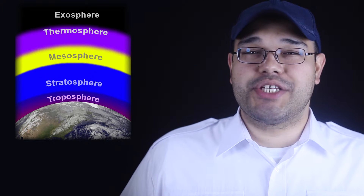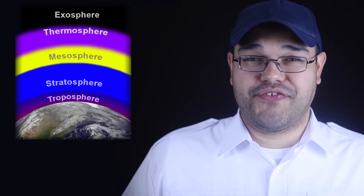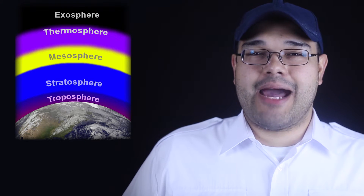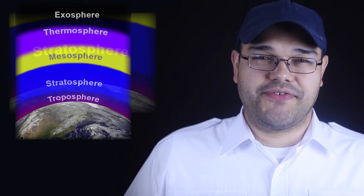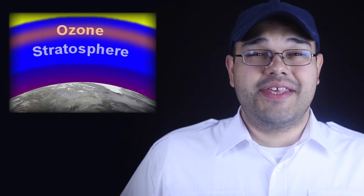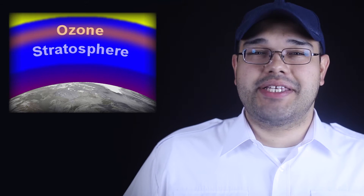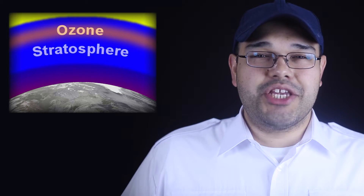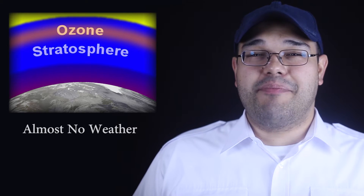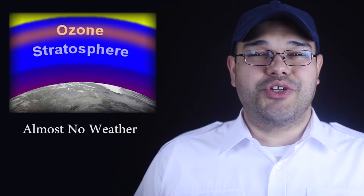Next up are the stratosphere, mesosphere, thermosphere, and exosphere. Each of these layers has a lapse rate that is different from the troposphere. Of particular interest is the stratosphere, in which the temperature increases with height due to the ozone layer. This negative lapse rate results in very stable air and the elimination of vertical currents, which is why water vapor, condensation nuclei, and turbulence don't normally extend into the stratosphere.